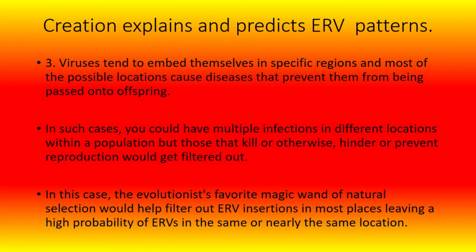Number two: they are actually ERVs, but they originally targeted specific code patterns for insertion. This would be a likely result of the theory that viruses were originally designed to be helpful DNA transfer mechanisms that, following the fall, some of them went rogue, mutating and causing disease. This could easily explain any ERVs in exactly the same location in unrelated organisms that have segments of common DNA. Number three: viruses tend to embed themselves in specific regions, and most of the possible locations cause diseases that prevent them from being passed on to offspring. Those that killed or hindered reproduction would get filtered out, leaving a high probability of ERVs in the same or nearly the same location.